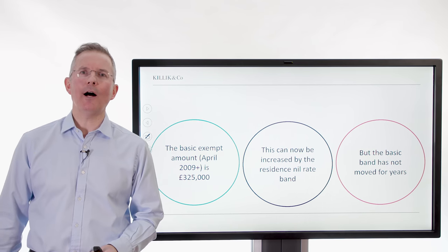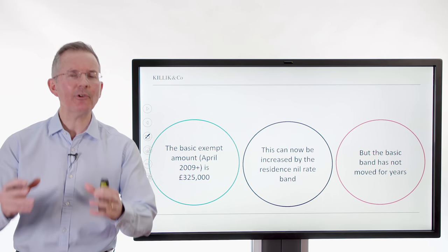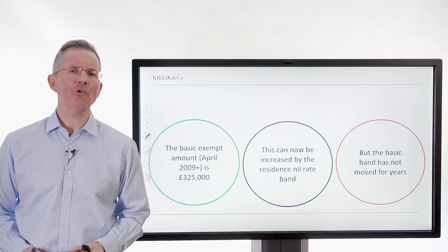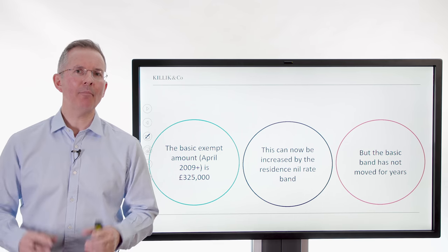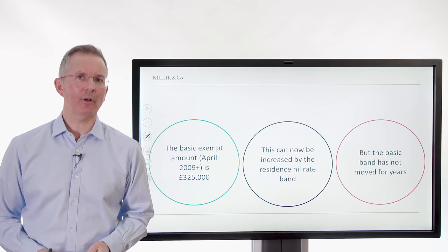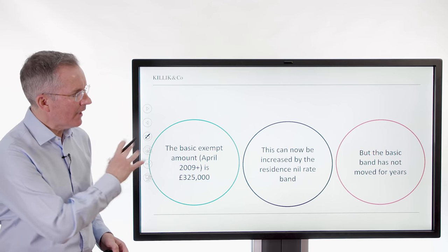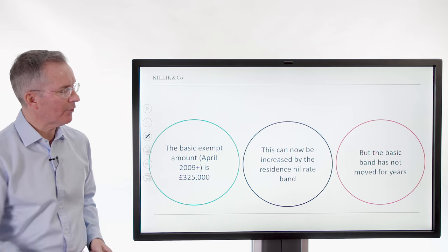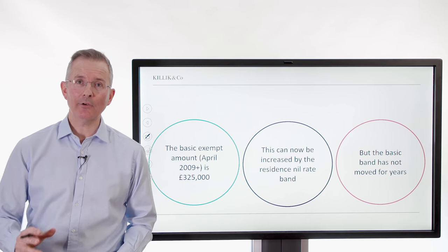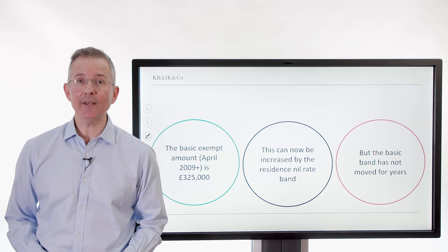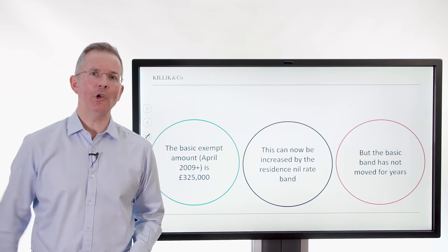It reminds me of when insurance companies say they're offering you a generous no-claims discount — surely what they're doing is making claim penalties on people who need the policy. It's all a question of semantics. The government have brought in this residence nil rate band; it adds to the basic rate band, but the basic rate band hasn't moved for years, and they're only drip-feeding in the new increment.